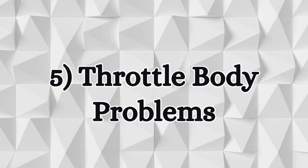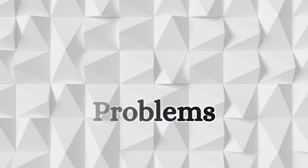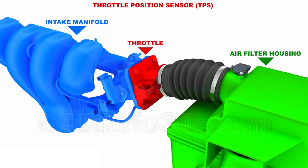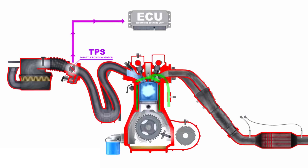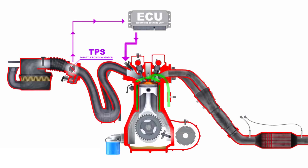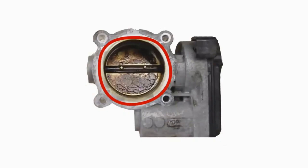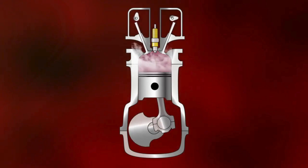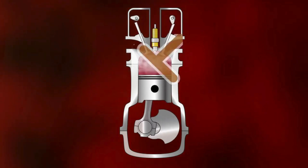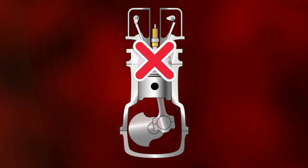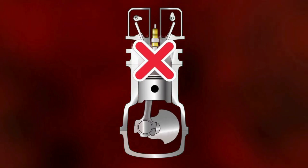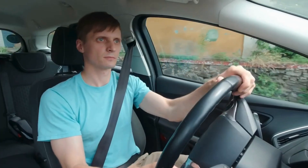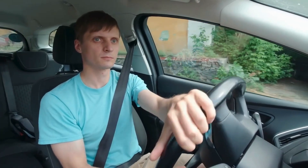Five: throttle body problems. The throttle body controls the amount of air entering the engine. If it becomes dirty, stuck, or malfunctions, it can affect the air-fuel mixture, leading to poor engine performance. In such conditions, your vehicle's main computer triggers the limp mode.